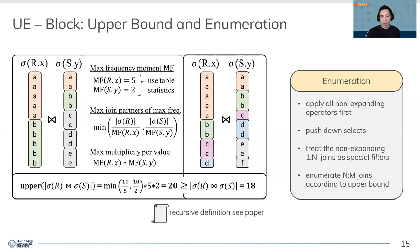Based on this upper bound, we apply our customized enumeration approach where we start with applying all non-expanding operators in the first phase. We push down the filters to the base tables and treat the one-to-N, the non-expanding primary key foreign key joins, as special filters, as they can never expand but only reduce the size of a foreign key partner. Then, for the more dangerous and potentially expanding N-to-M joins, we use our upper bound and apply a customized enumeration approach.